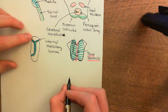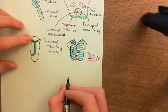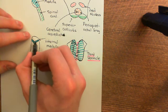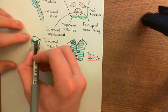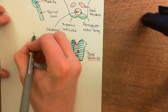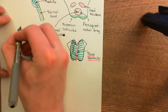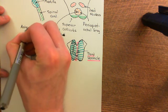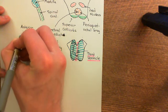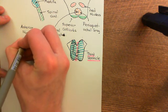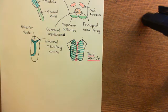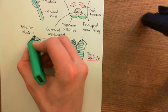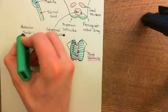Firstly, this nucleus right at the front — this is not just one nucleus, this area actually contains a huge number of separate nuclei. But all of the nuclei in this area at the front are collectively known as the anterior nuclei of the thalamus. I will colour in that area which contains the anterior nuclei of the thalamus in green.